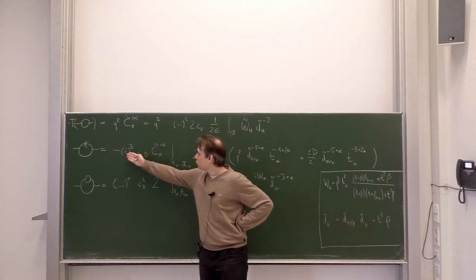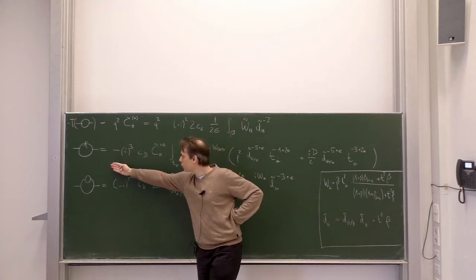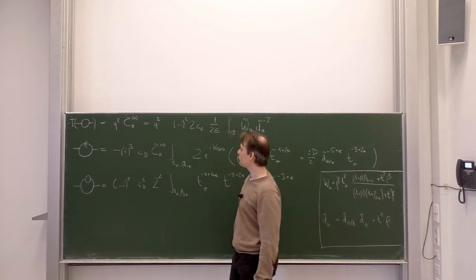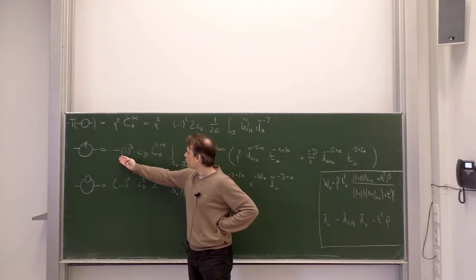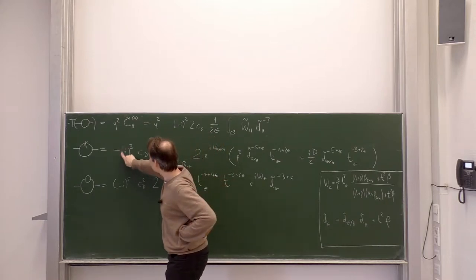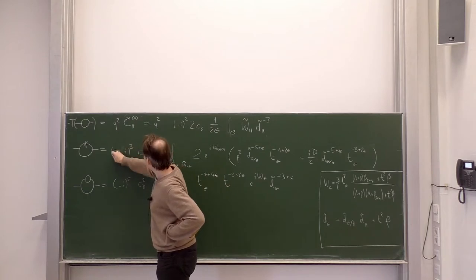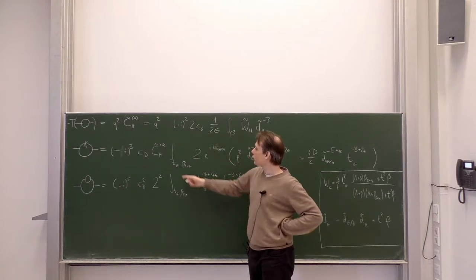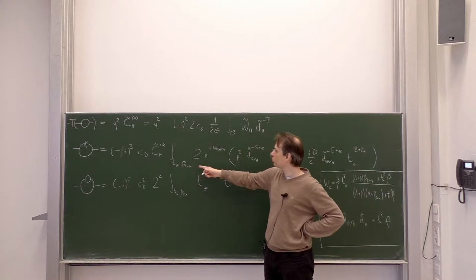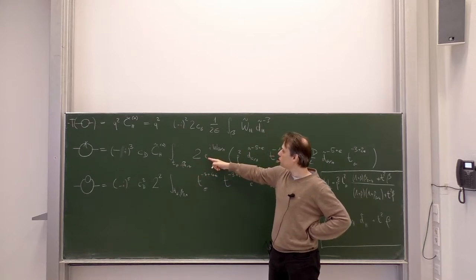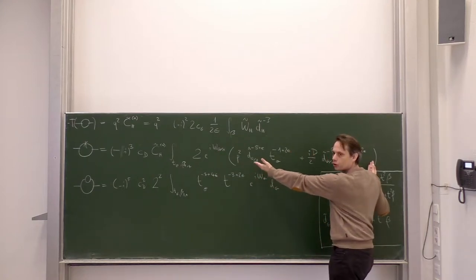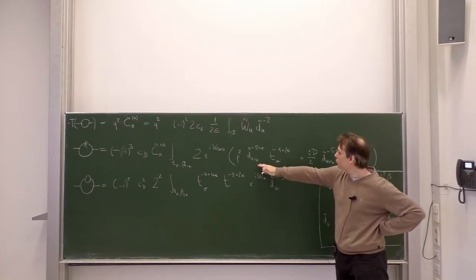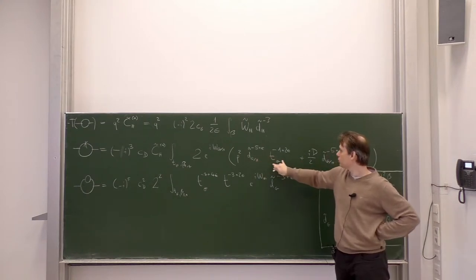Then we needed to look at the insertion of that into the one-loop counterterm diagram. The difficulty was the momentum dependence. We dealt with it using the u-variables and the derivatives with respect to u. The result is minus i cubed times the d-dimensional loop factor times a numerical coefficient, times the remaining integral over tg, beta 3, and beta 4. The integrand is the usual 2 times the exponential of the appropriate diagram times a complicated factor arising from the derivative with respect to u, with different terms involving different exponents of d-tilde and tg.